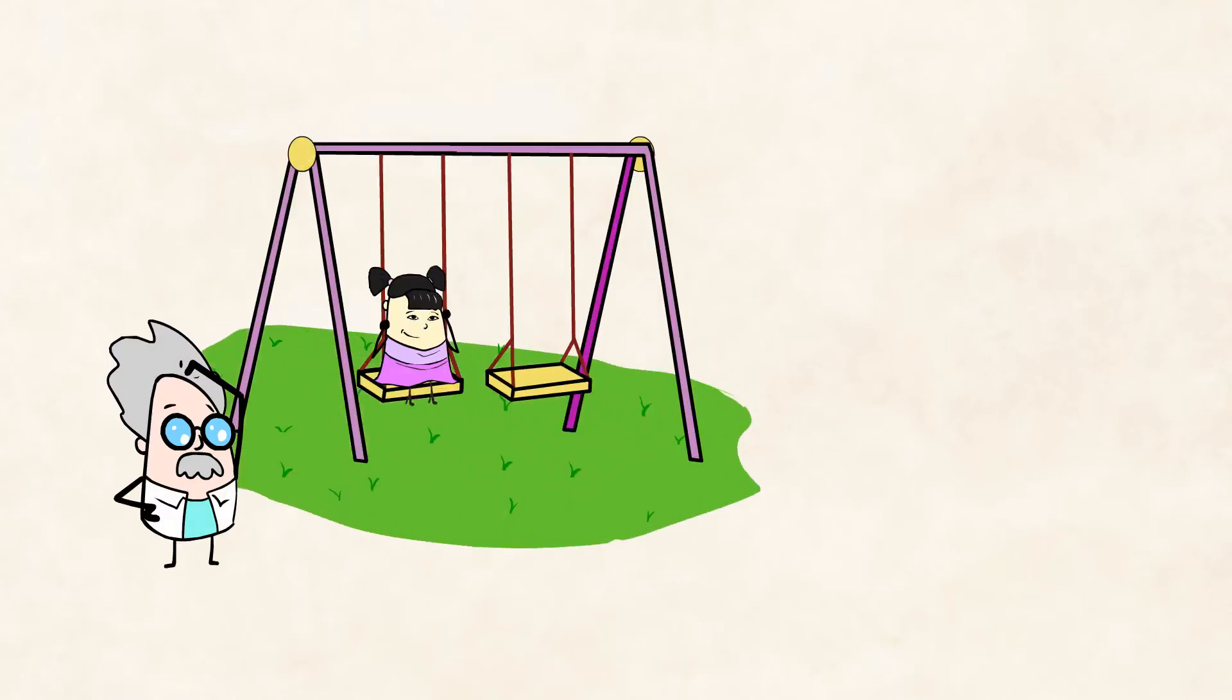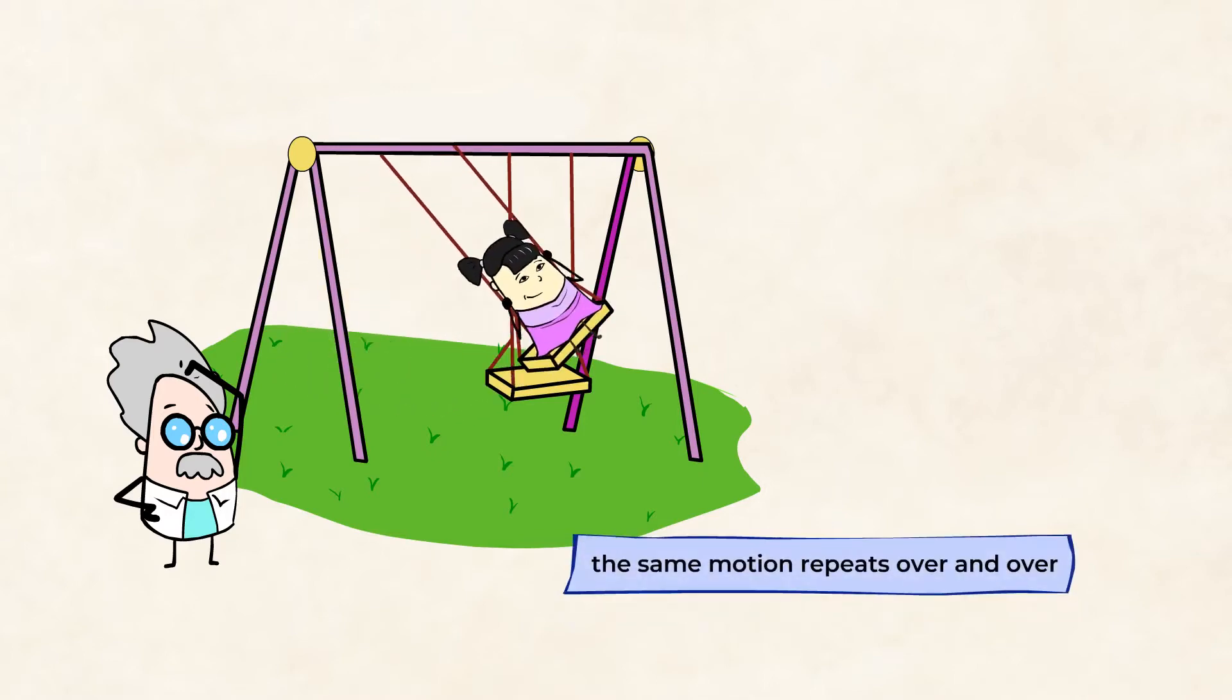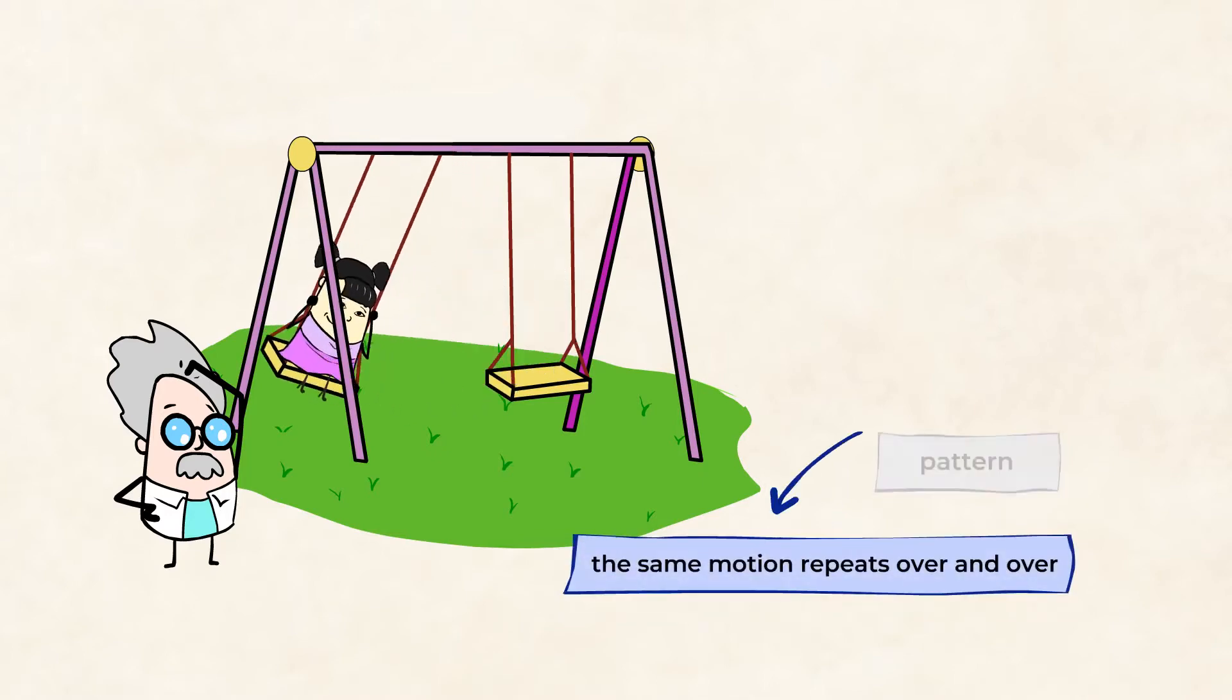Imagine a child at a playground, swinging on the swings. She moves forward and back, of course. But she also moves up and down as she swings higher and higher. When the same motion repeats over and over, it creates a pattern.